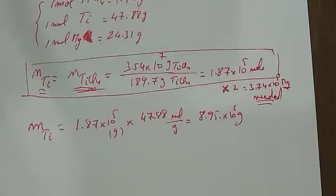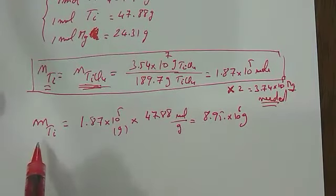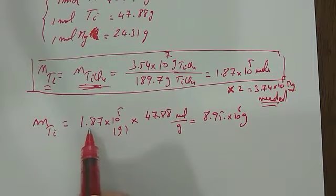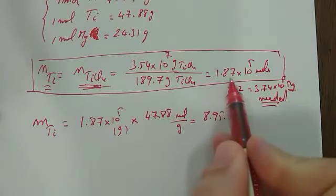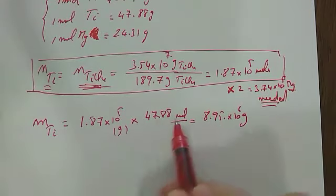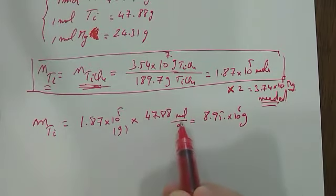I need to find the mass of Ti that I'm obtaining from the reaction. The mass of Ti equals the number of moles, which is 1.87 times 10^5, multiplied by 47.88 grams per mole.